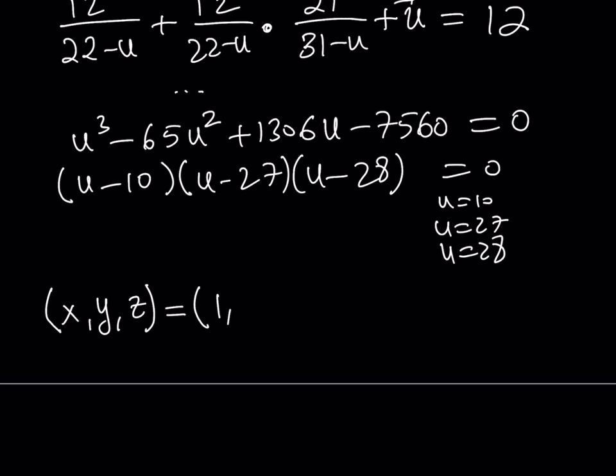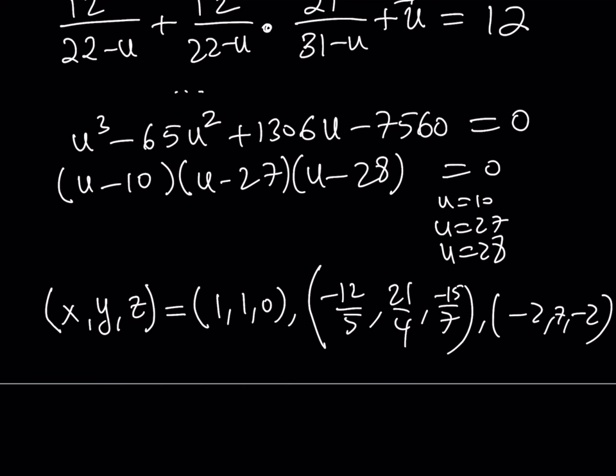Let's go ahead and do that and talk about the second method. So x, y, z is going to be either 1, 1, 0, or it's going to be negative 12 over 5, comma 21 over 4, comma negative 15 over 7, or it's going to be negative 2, 7, comma negative 2. So we got three solutions for the ordered triple x, y, and z.